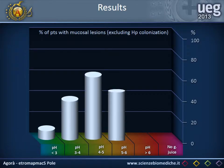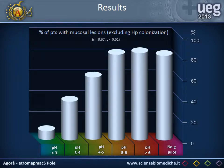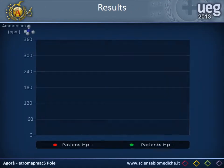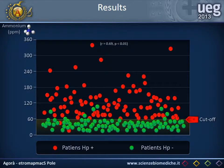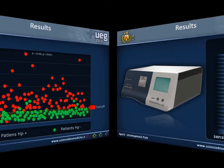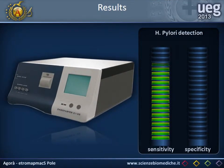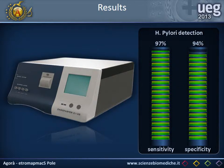A strong correlation was found between mucosal lesions and pH value. As you can see, the rate of patients with one or more histological lesions increased proportionately at increasing pH values. Another significant correlation was found between ammonium concentration and H. pylori infection. Nearly all infected patients were distributed above the cutoff point of 61 ppm of ammonium concentration.